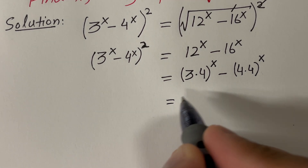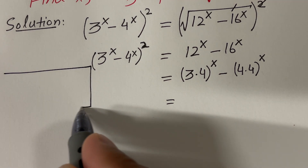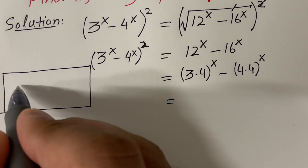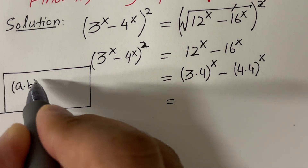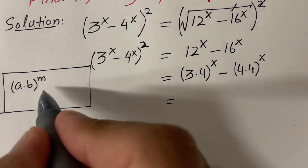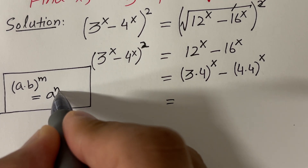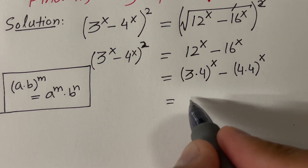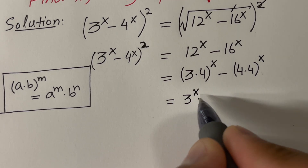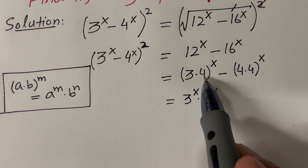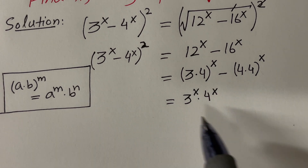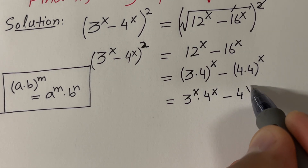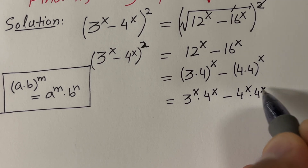Now we want to further simplify the right hand side. If you remember this property: if you have two numbers a and b with some exponent on them, then (a·b)^m equals a^m times b^m. Let's use this property here. Therefore, we will have 3 raised to the power x times 4 raised to the power x. Similarly, 16^x will give us 4 raised to the power x times 4 raised to the power x.